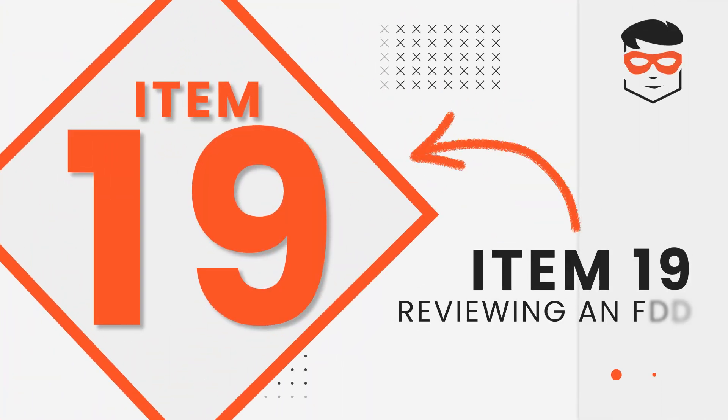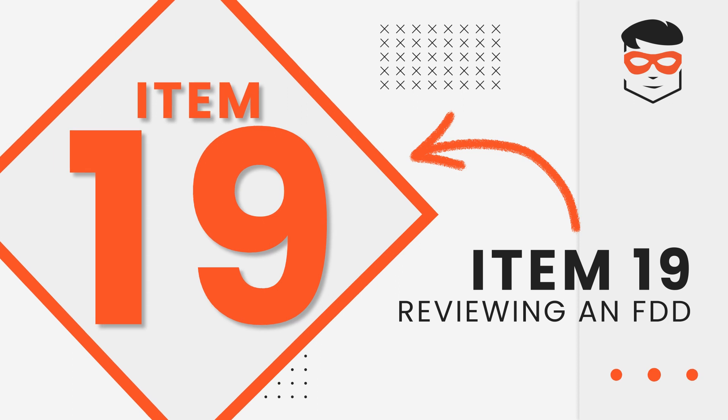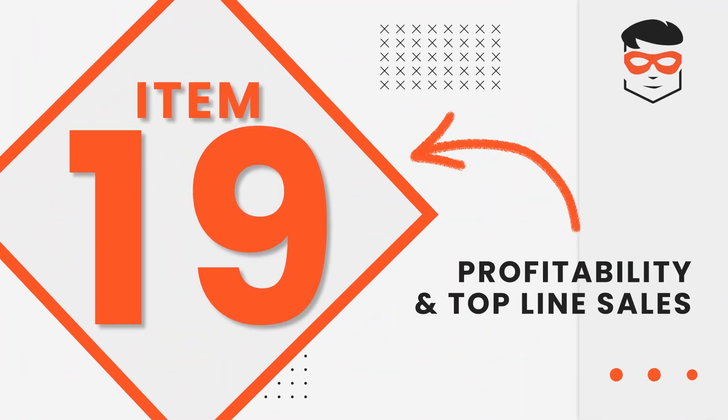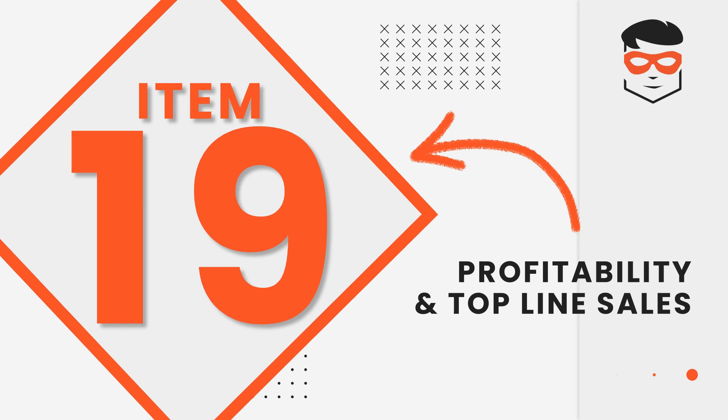The first thing you're going to want to search is Item 19. Type Item 19 in your search bar and scroll down into the document. This is where the franchisor lists out things like profitability, sales numbers, and KPIs from both franchise and corporate locations. We're going to want to find profitability and top-line sales — write those down somewhere because you'll need to reference back to them later.